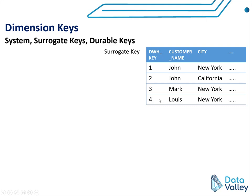For example, in this customer dimension table, we have a unique key for each record. Whenever we insert a new record into this dimension table, it will get a new surrogate key value. This is very important — we need to uniquely identify each record in a dimension table so we can link between the fact table and the dimension table. It is also very important in slowly changing dimensions, which we will discuss in coming lectures.